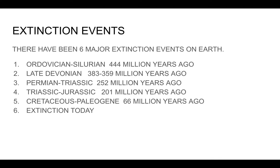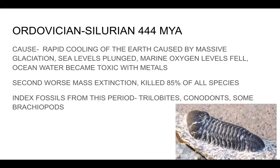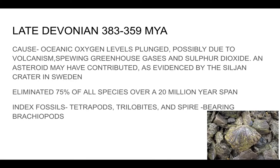You might wonder why things appear in some layers and not others. We've had six extinction events in the 4.6 billion years Earth has been here. The first was the Ordovician-Silurian extinction, 440 million years ago, caused by rapid cooling of the earth and toxic oceans — 85% of all species disappeared. Index fossils from this period include trilobites, conodonts, and brachiopods.